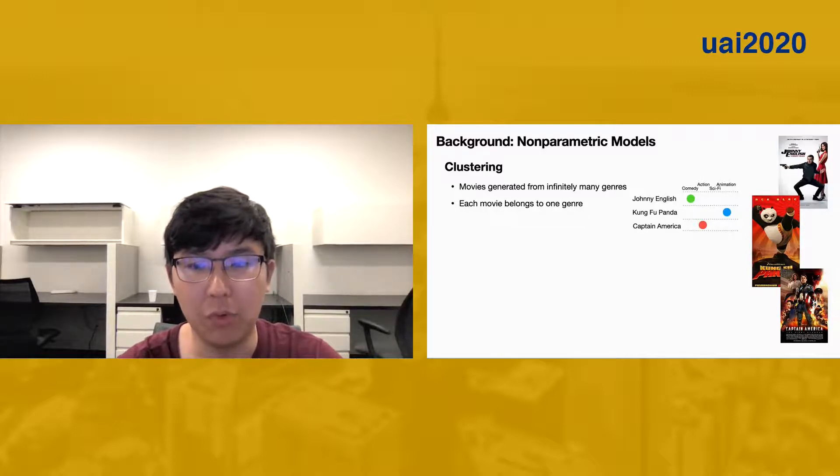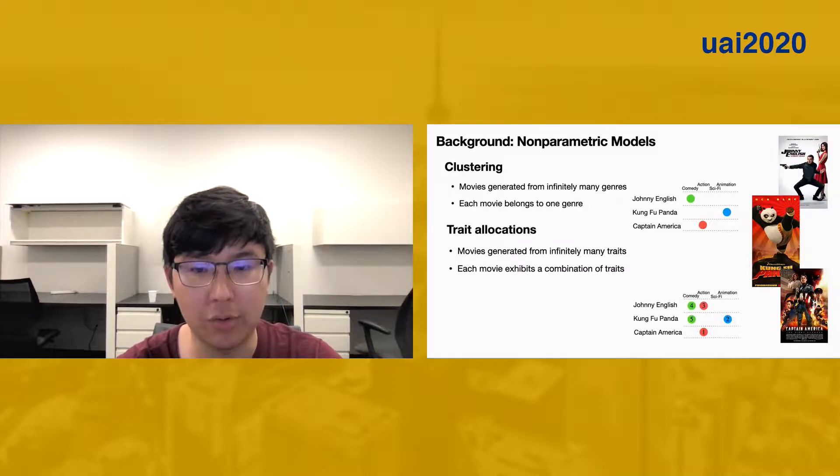However, some of these movies may be better represented by a combination of genres weighted by different amounts. For example, Johnny English is mostly comedy but still has some action sequences. That is, we assume movies are generated from infinitely many genres, but unlike in clustering, each movie can now belong to many overlapping genres.